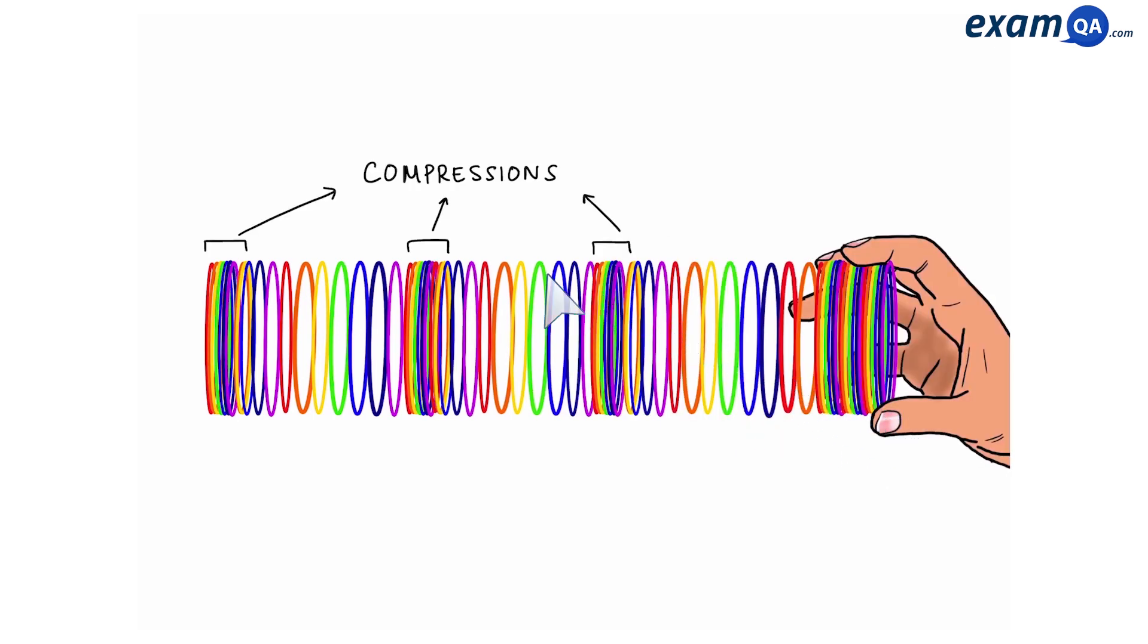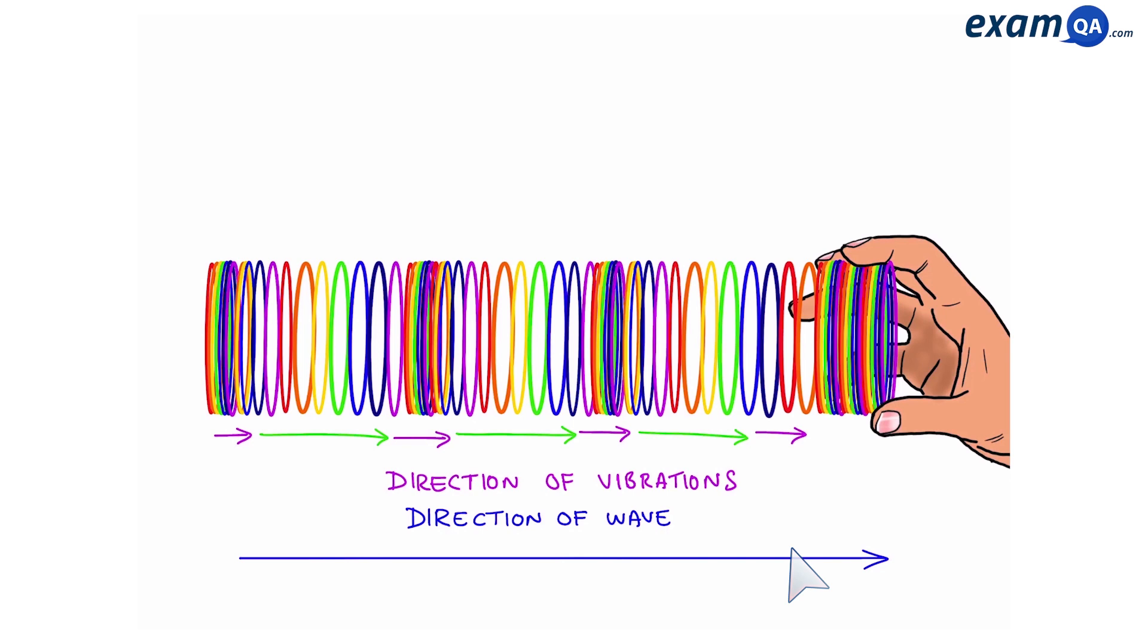Now in these areas we have compression and you can see that the strings are closer together, and then we also have areas where the strings are further apart and these are called rarefactions. Now notice the wave is moving this way and so are the vibrations. They are parallel and as a result this is called a longitudinal wave.